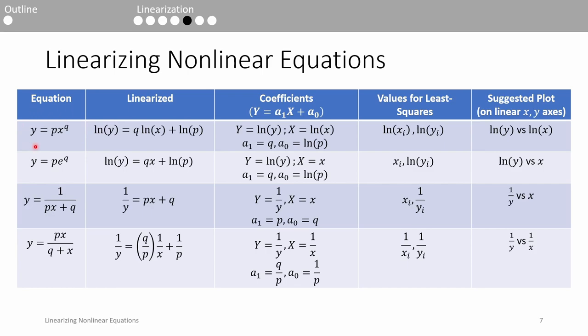The first equation represents a power law. Linearizing a power law is similar to linearizing an exponential model. You take the natural log of both sides. In this form, ln of y is the dependent variable, q is the slope, ln of x is the independent variable, and ln of p is the y-intercept. When you apply least squares, you do it as normal except you substitute ln of x and ln of y in for x and y respectively. When you plot the data, which you should always do, you should plot ln y versus ln x in order to make the data look linear.